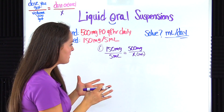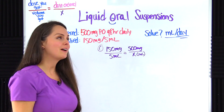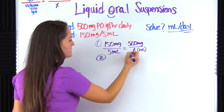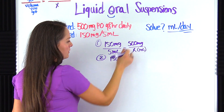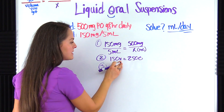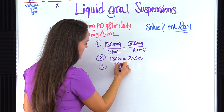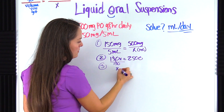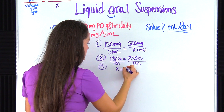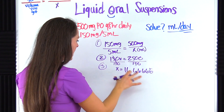Checking units: milligrams match milligrams, and milliliters match milliliters — no conversion needed. So we go straight to cross multiplying: 150 times x gives 150x, and 500 times five gives 2,500. Divide both sides by 150: x equals 2,500 divided by 150, which gives 16.6666 repeating. Don't round just yet. That is our milliliters per dose.